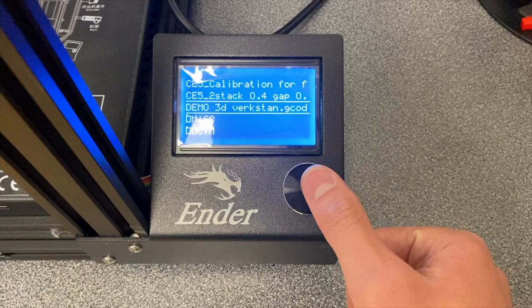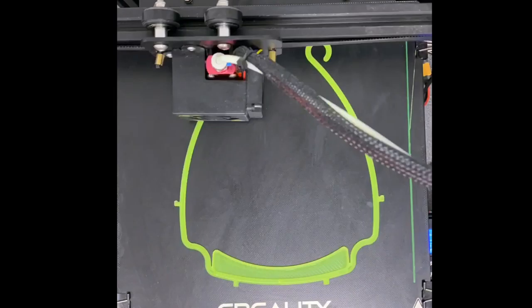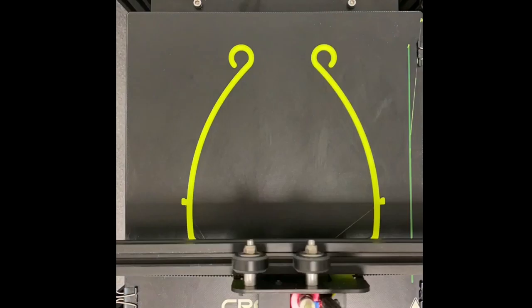We start the print. The printer's extruder travels along the build surface based on previously programmed instructions. It continues to melt plastic and deposit it in subsequent layers on the build plate.